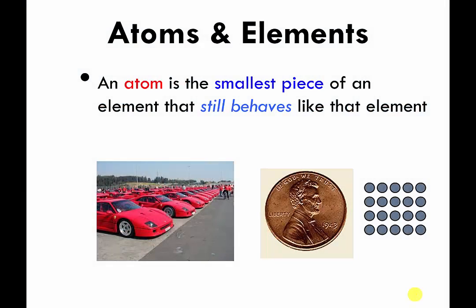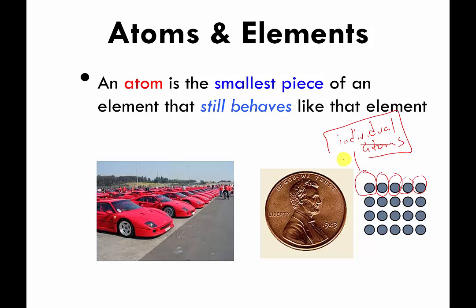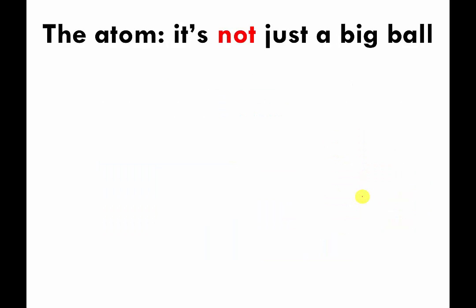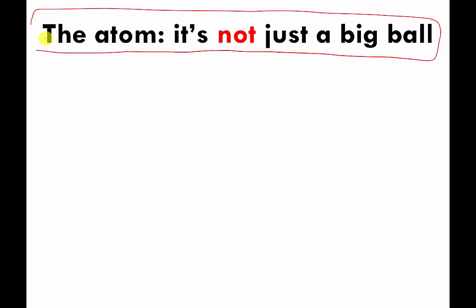At this point we are going to start talking about pieces of the atom. These little circles here were my cartoon drawings of atoms, so these are individual atoms. What I'm going to show you on the next slide, once we start talking about pieces of the atom, is we are going to zoom in to one of these circles. Pretend that all of the others go away and we are basically zooming in and looking at the inside of this circle. The title of this is: the atom is not just a big ball or a big circle.